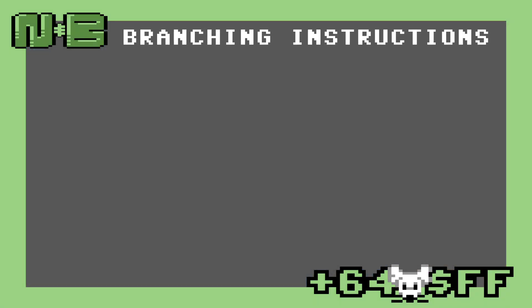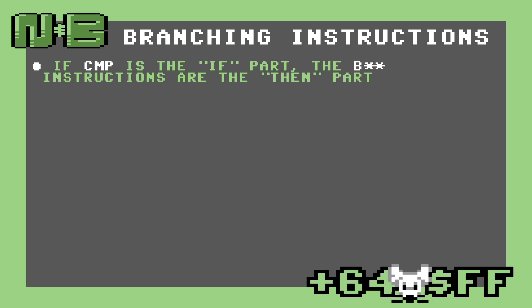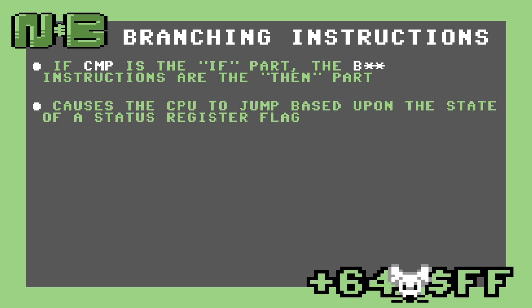You can think of branching instructions as the second half of a basic IF statement. If the CMP instruction is the IF and the conditional, the branches are the THEN part of the statement. Each instruction uses a different status bit to cause the CPU to jump to a memory location. Of the eight flags in the status register, only four can be used.